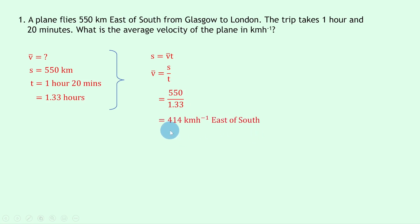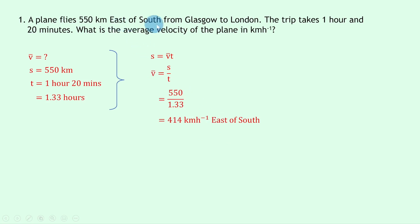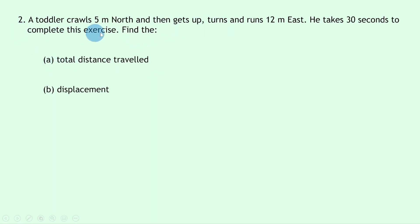Rearranging for v-bar, we divide both sides by t to get v-bar equals s over t. Substituting in the numbers gives us 550 divided by 1.33, and putting that into your calculator should give you a final answer of 414 kilometers per hour. But remember, average velocity is a vector, so we need to state our direction with our answer — and the direction from the question was east of south.